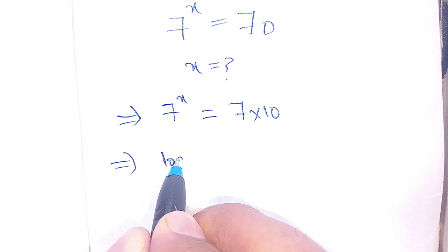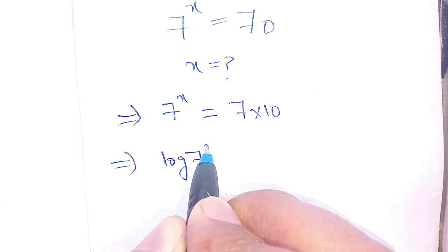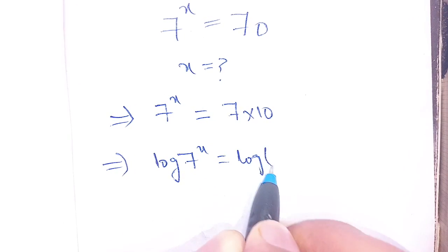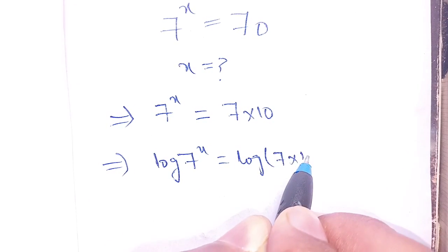on taking log on both sides, we get log of 7^x is equal to log of 7 times 10.